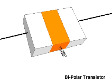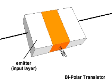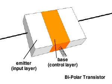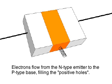In bipolar transistors, the input layer is called the emitter, the control layer the base, and the output layer the collector. When a current is applied to the emitter of an NPN transistor, electrons readily cross over to the P-type base, filling the electron holes.